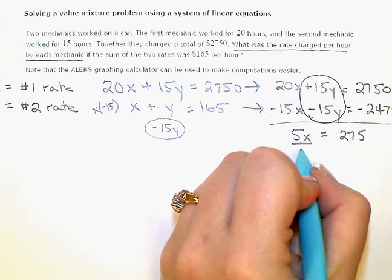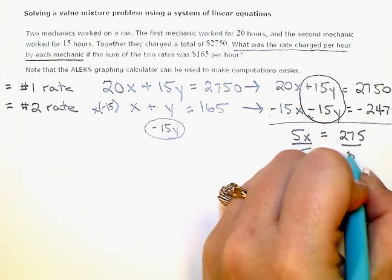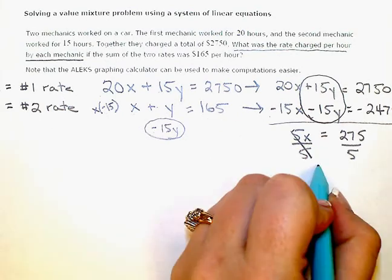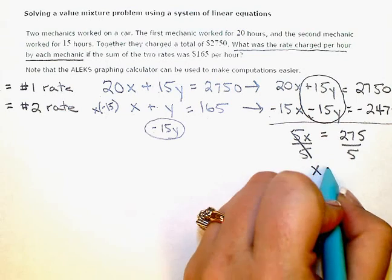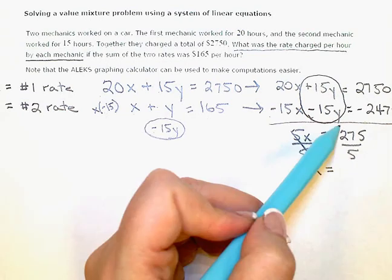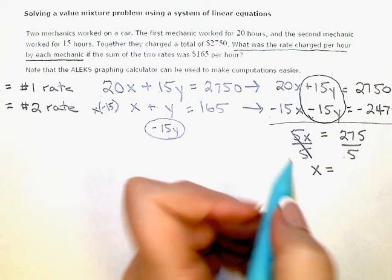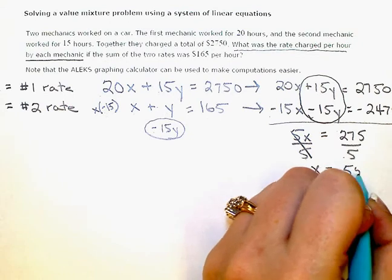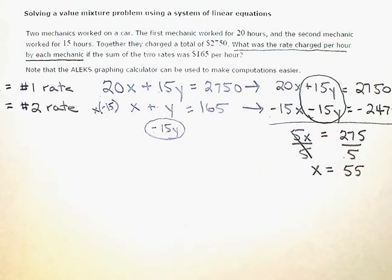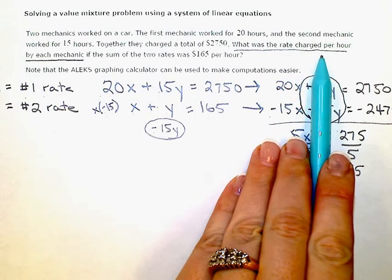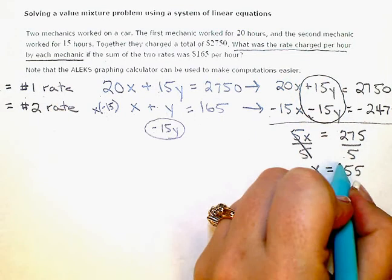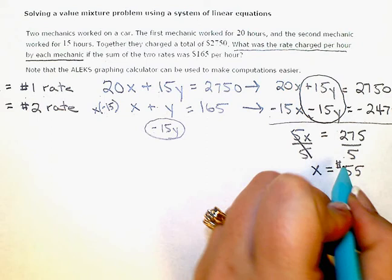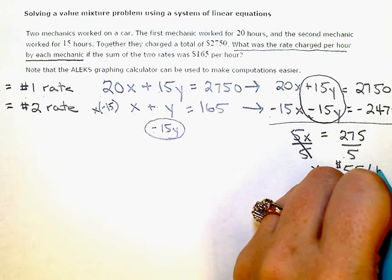Divide both sides by 5 to isolate my x, and I get x equals 275 divided by 5, which is 55. Remember, x is mechanic number one's hourly rate or how much he charges per hour. So we know mechanic number one charges $55 per hour.